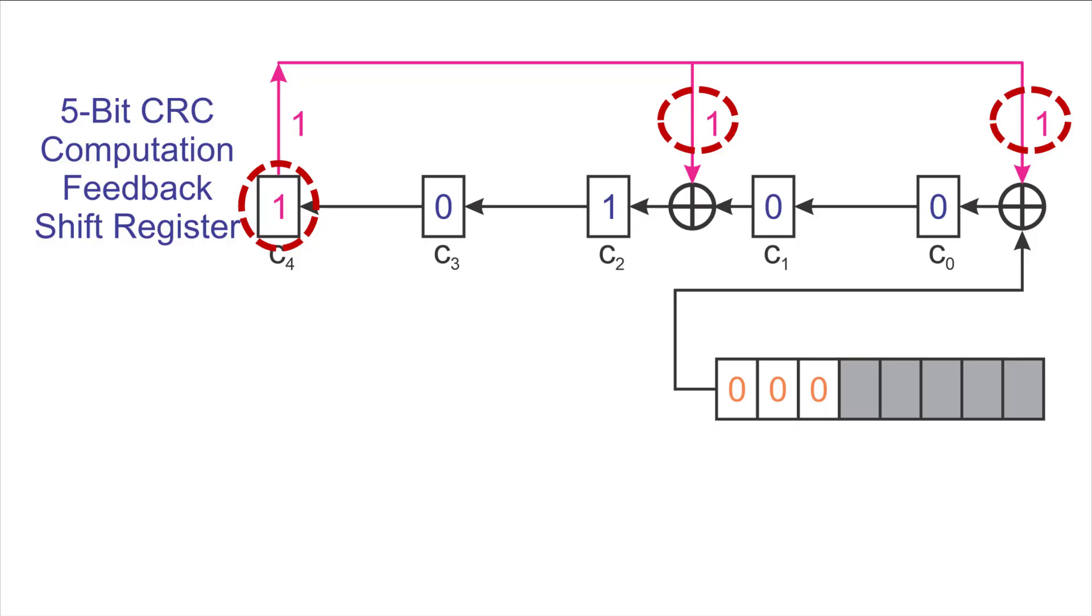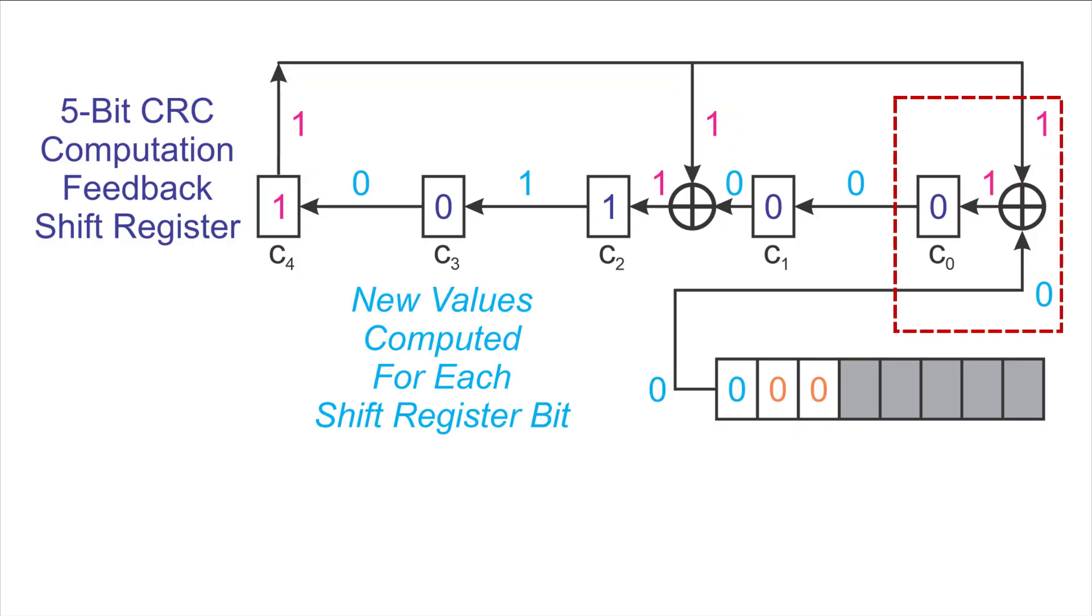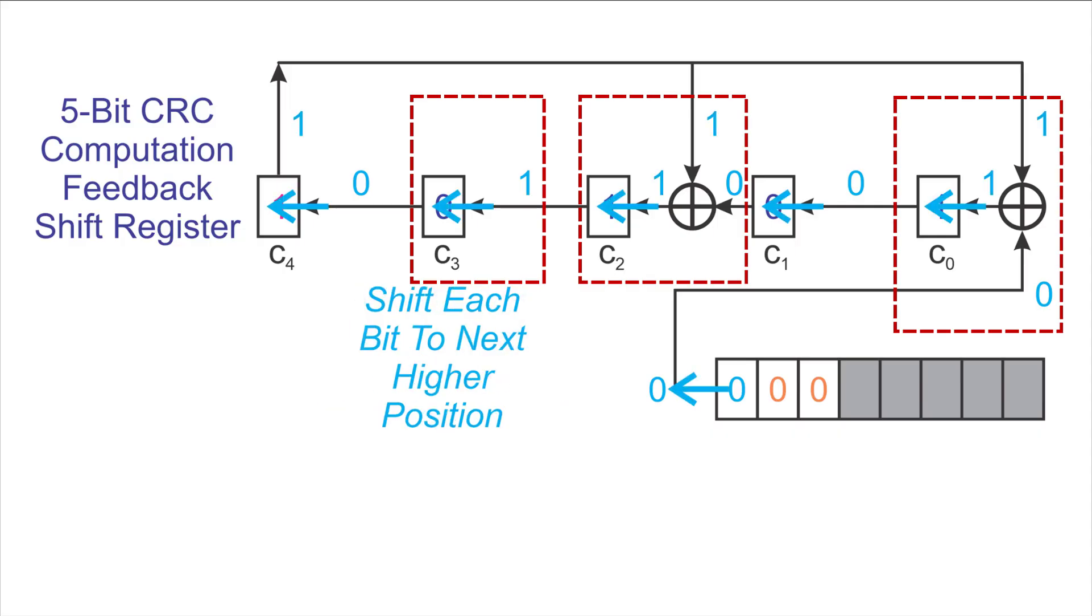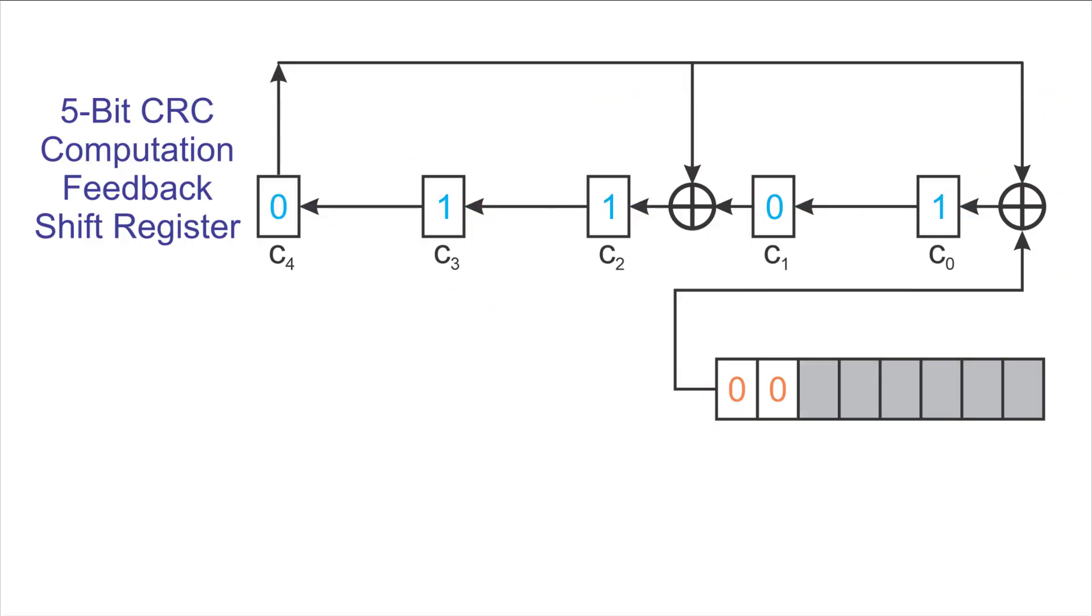Now when we do the computation, things get interesting because the input to c0 is the top bit of the code word 0, but XORed with the top bit c4, so that is 1 XOR 0 giving a 1. The input to c2 is also a 1 XOR 0 giving a 1. So what we'll have is a 1 bit going into c3, a 1 bit going into c2, and a 1 bit going into c0. Now we cycle the clock and we see that happening, so our shift register is now 0, 1, 1, 0, 1.